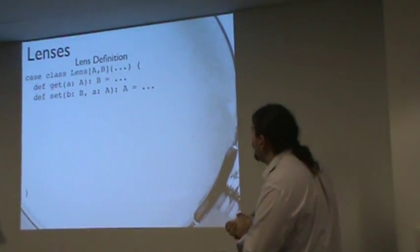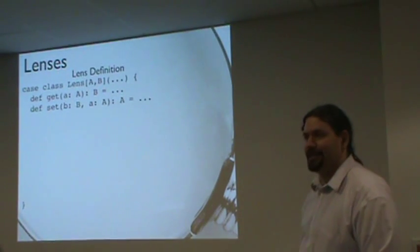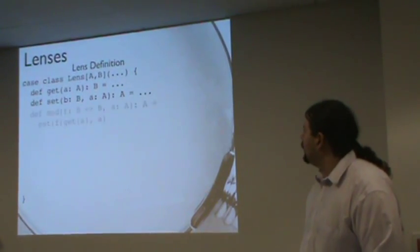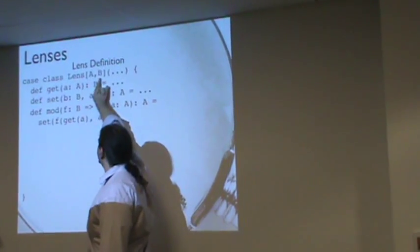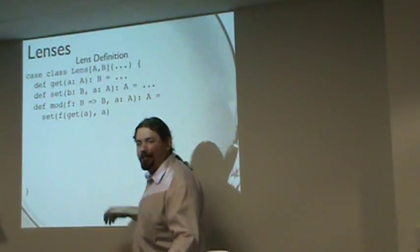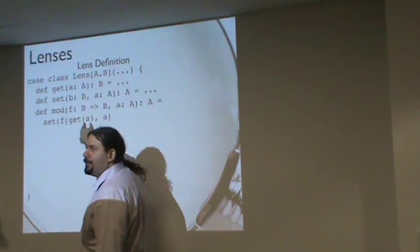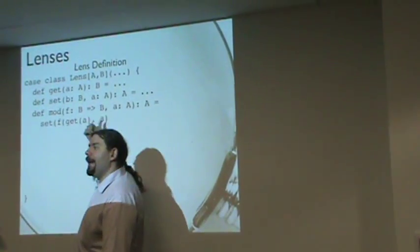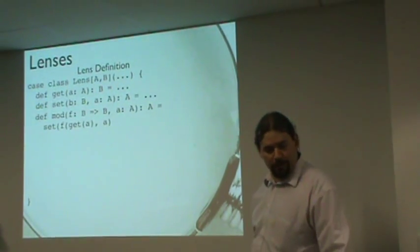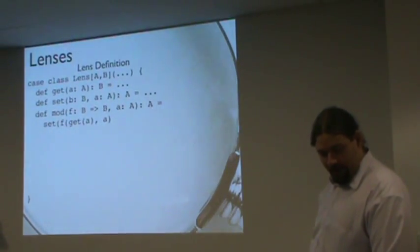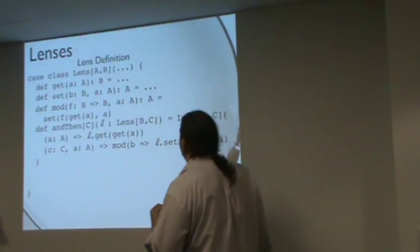We have our stock definition of a lens. Given a lens and a function that takes a B to a B, the lens lets us get a B out of an A. We can get the value, apply our function to it, and then set it right back. We have to get back the result or you could never see that it happened.